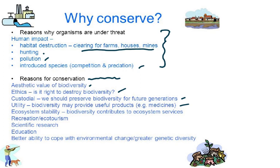Digitalis, a drug used for heart failure, is obtained from a plant. Ecosystem stability: biodiversity contributes to ecosystem services, meaning all food chains are interlinked. So if the oak trees are finished, then the birds which nest in oak trees will also finish. Then recreation and ecotourism, scientific research, and education. There is also a better ability to cope with environmental changes when there is greater genetic diversity. The reason to conserve is very important.